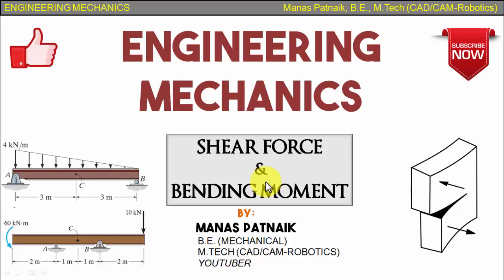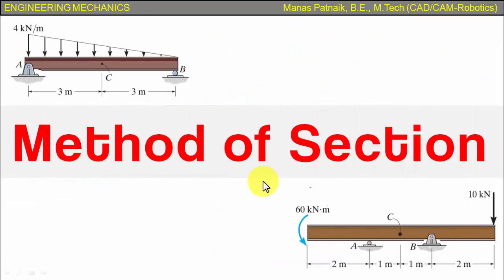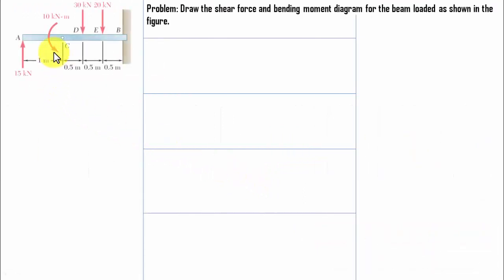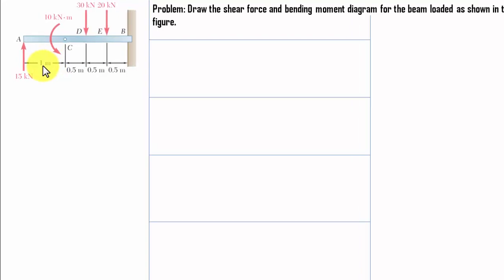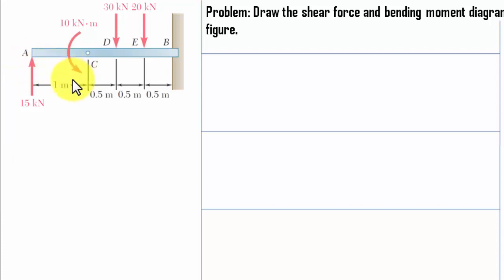Hi guys, this is your friend Antutu Manas and today I'm back again with yet another video on shear forces and bending moment diagrams. The method I'm going to be taking up is the method of sections. I've taken the case of a cantilever beam for which we are supposed to draw the shear force and bending moment diagram. Whenever you deal with problems based on cantilever beams, take the section from the free end. The free end is at A on the left-hand side, so we're going to be sectioning from the left. The sign convention says shear force downwards and bending moment anti-clockwise.